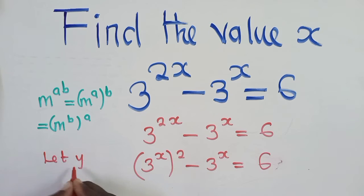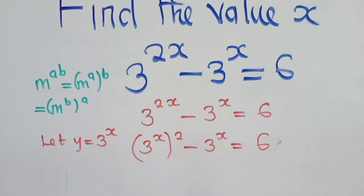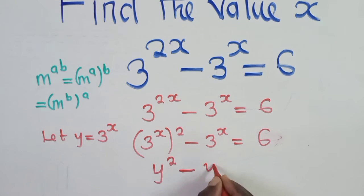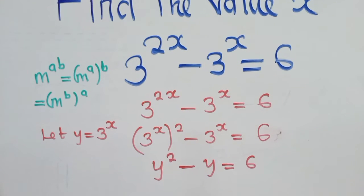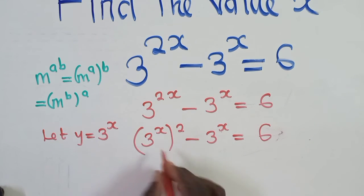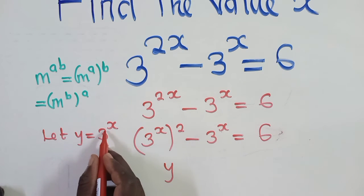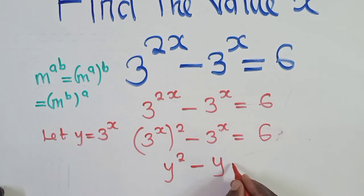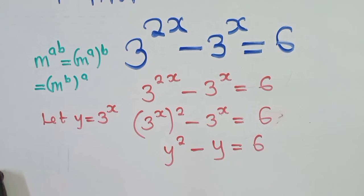The next thing is we let y be equal to 3 to the power x — that's what's inside both terms. So substituting, since y equals 3 to the power x, we remain with y squared minus y, which is equal to 6. This is a quadratic equation.